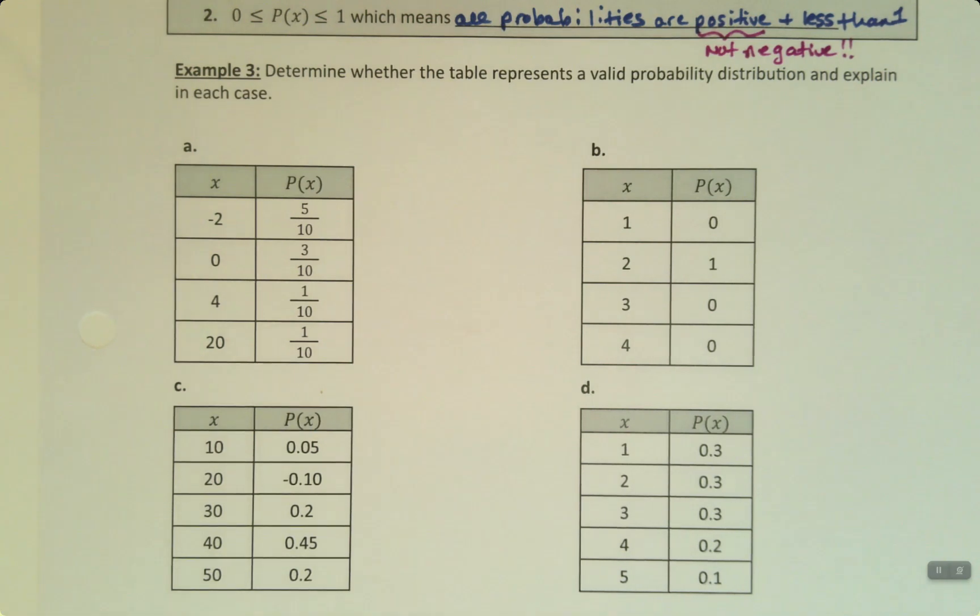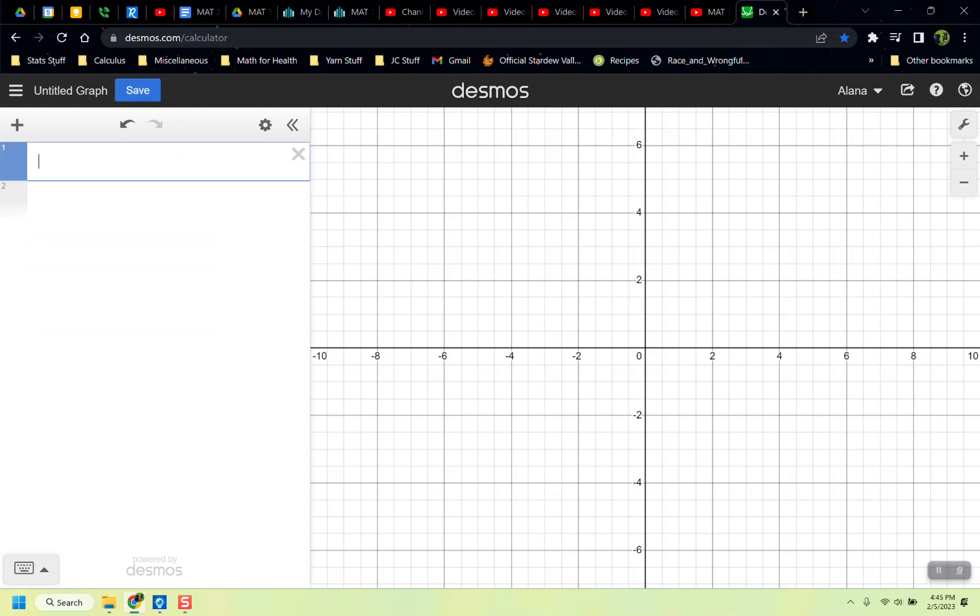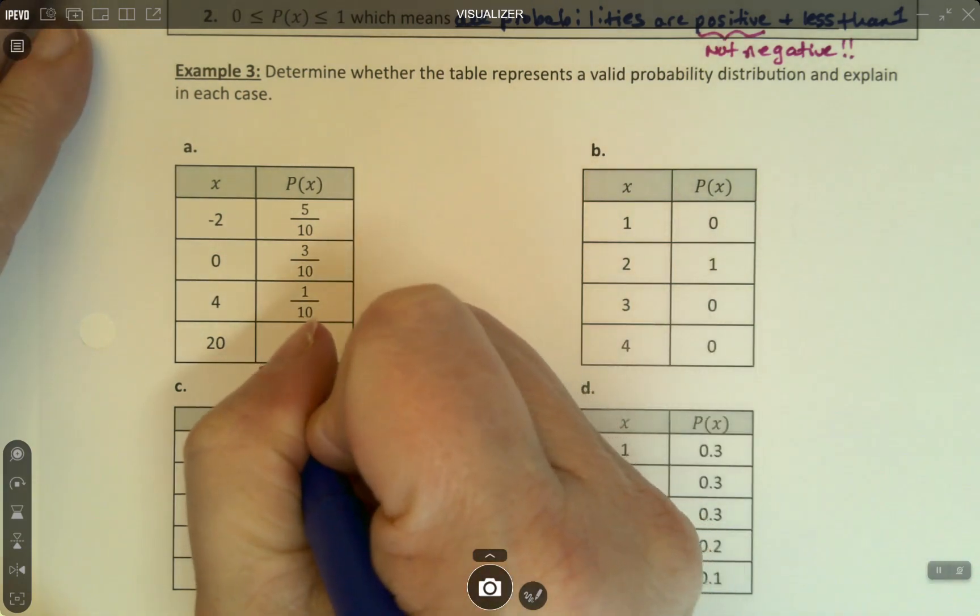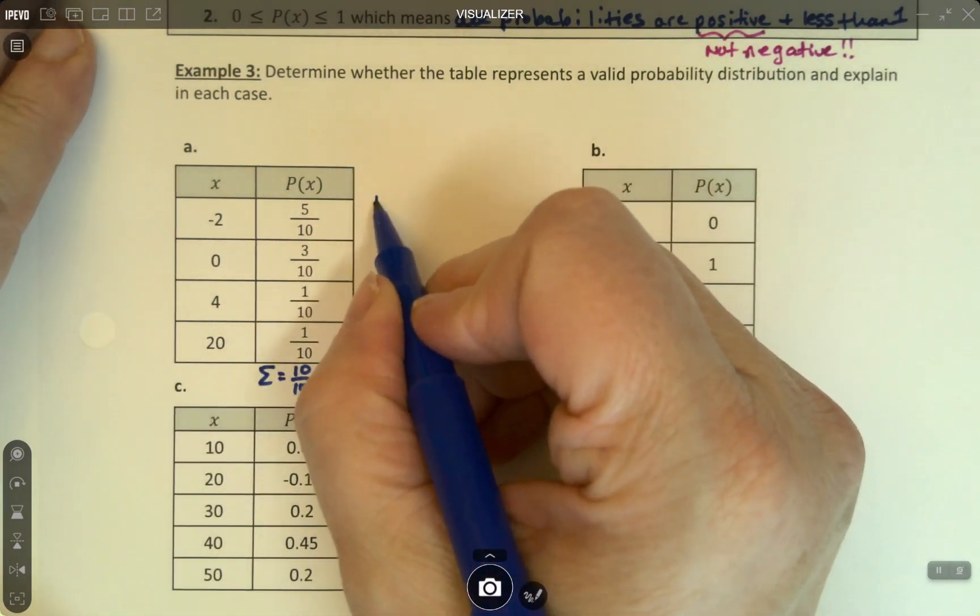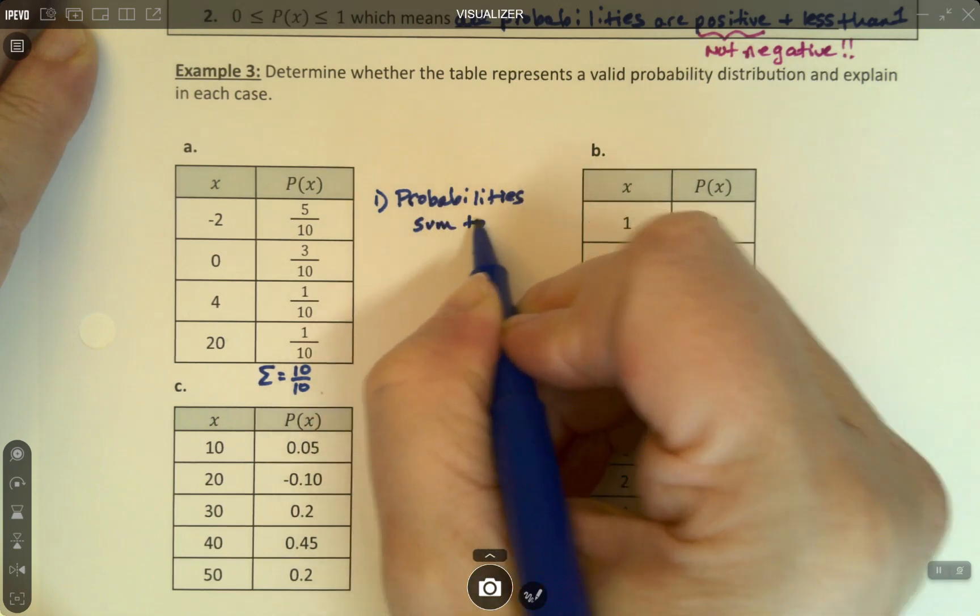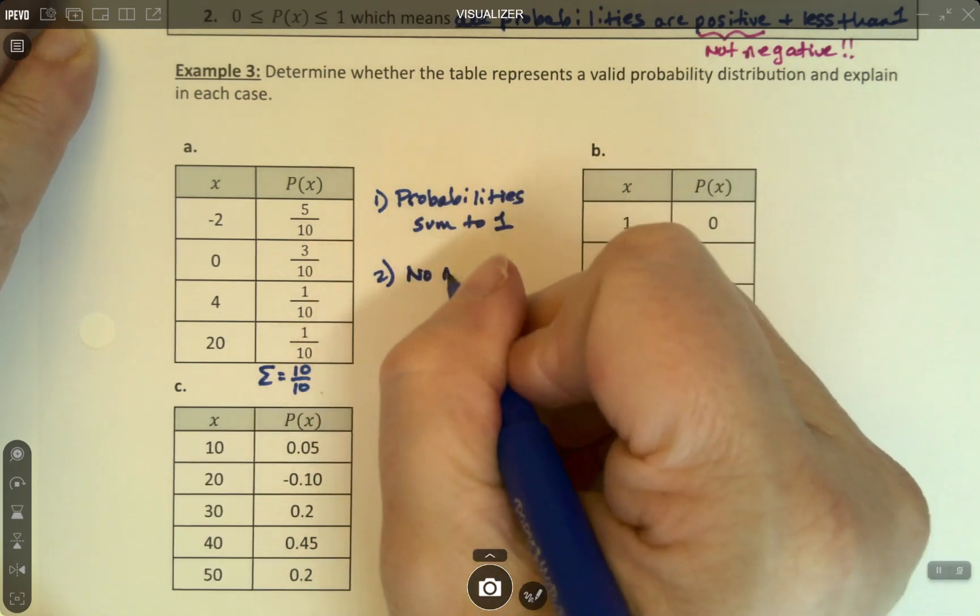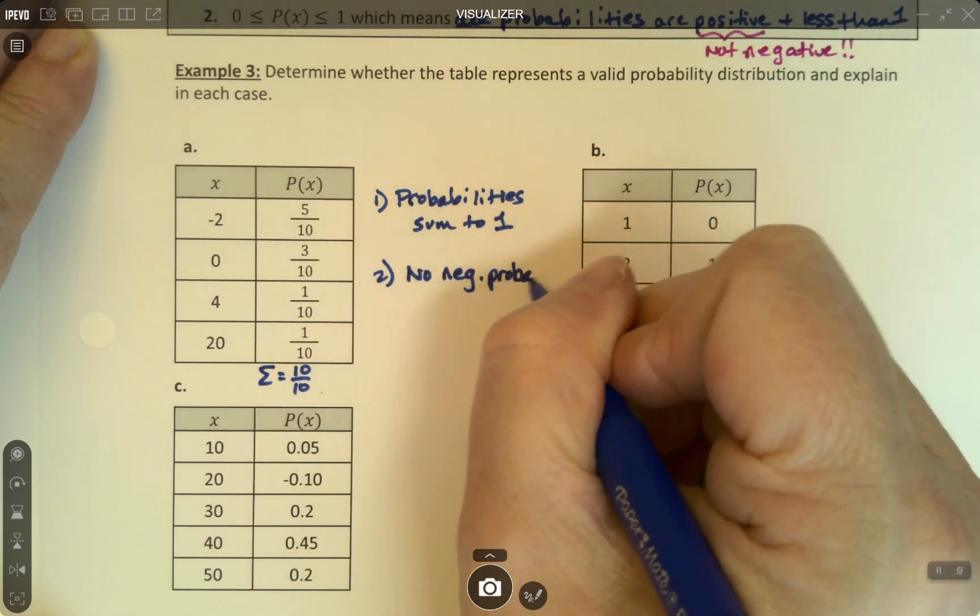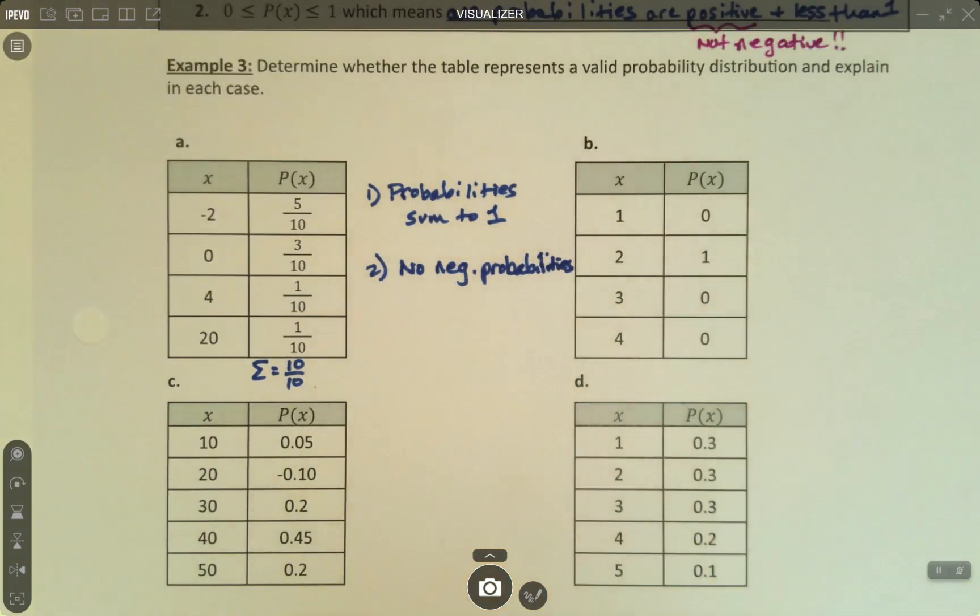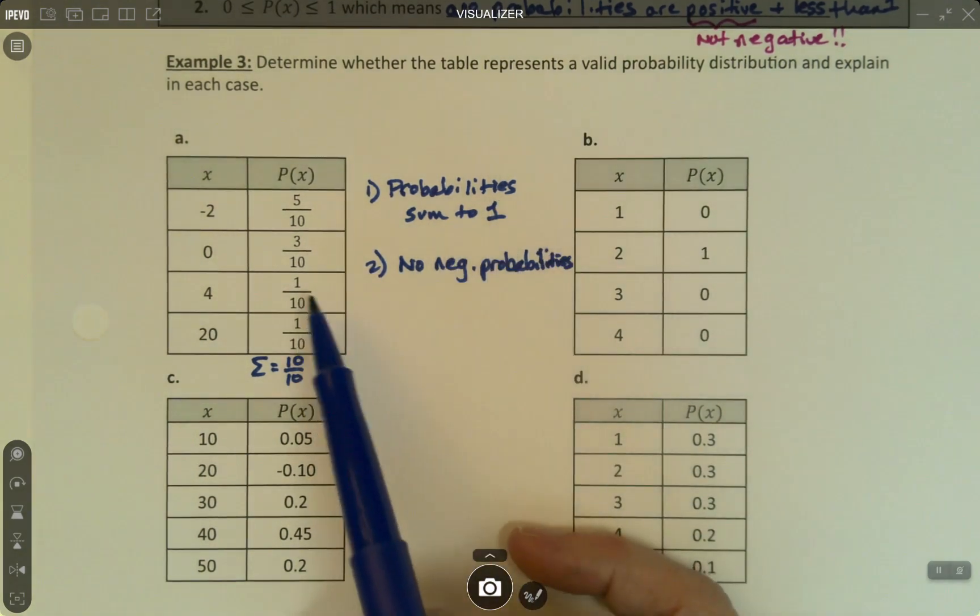So let me check the first one in decimals. So it was 5 out of 10, plus 3 out of 10, plus 1 out of 10, plus 1 out of 10. And sure enough, that adds up to 1. It makes 10 out of 10. So the sum here is 10 out of 10. All right, that's great. So then I've got number 1, probabilities sum to 1, and there's no negative probabilities. There's no negatives, and they add up to 1.